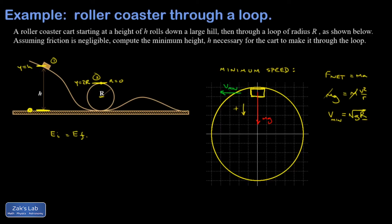And so E initial is just going to be mg times the initial y-coordinate, which is h. And then E final is going to be mg times the final y-coordinate, which is 2r, plus the kinetic energy.